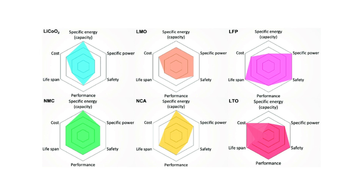As shown in this graph, different cell chemistries are plotted against parameters such as cost, lifespan, performance, safety, specific power, and specific energy. No single cell chemistry is best across all parameters — each excels in some areas. LTO has good lifespan, safety, and performance, but lacks specific power and is expensive. LFP has good lifespan and specific power but lacks specific energy. NMC shows overall good average characteristics, which is why it is used in most electric vehicles and popularly in Tesla.